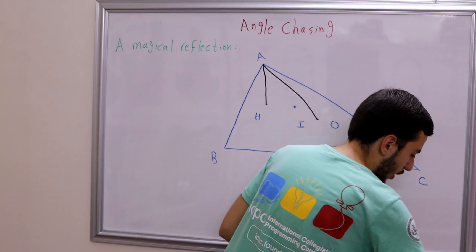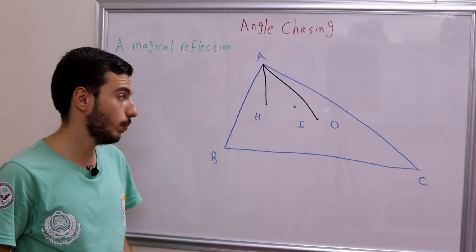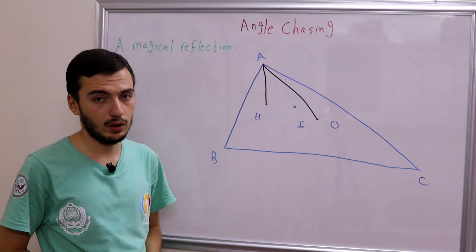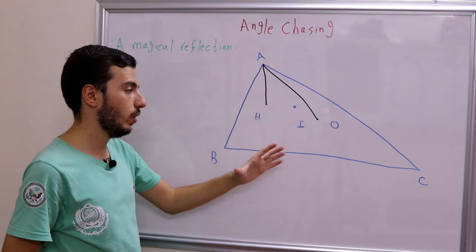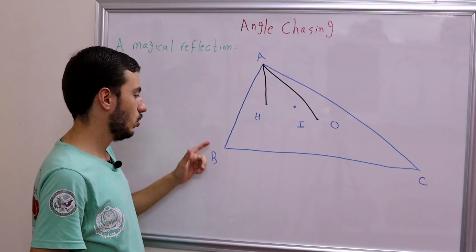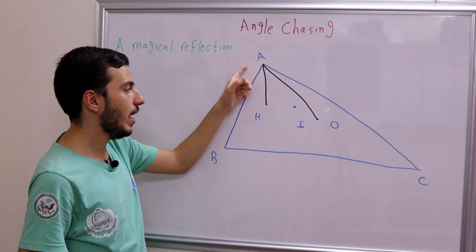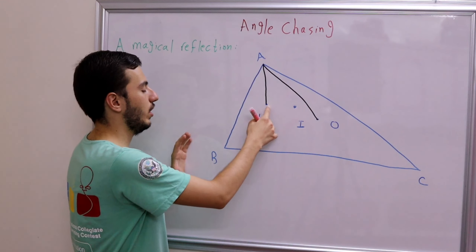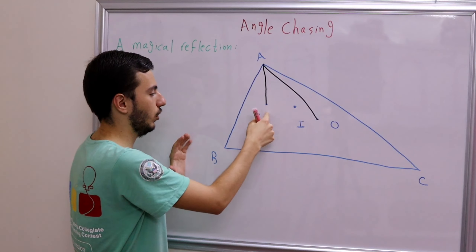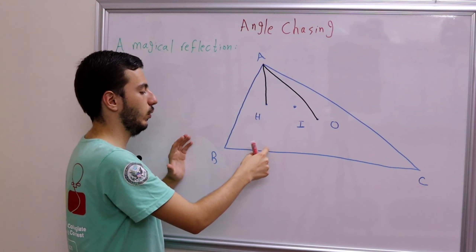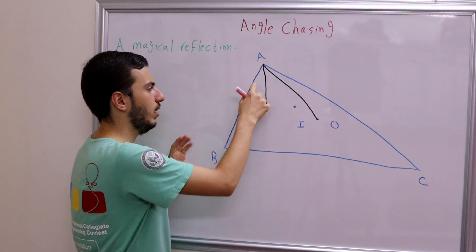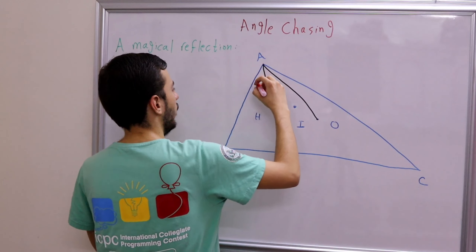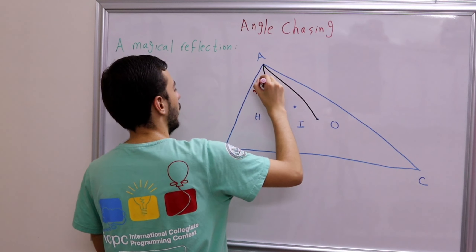Now we'll do some angle tracing, which should be really easy since we already know all the angles. What is angle BAH? Well, this is really simple — AH is an altitude. Imagine the foot of the altitude: that angle is 90°, so in right triangle, angle BAH is simply 90° − B.